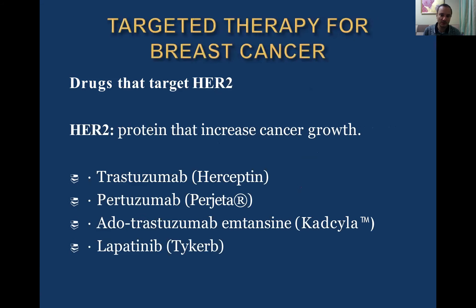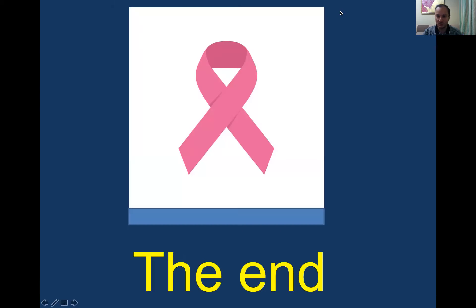Targeted therapy for breast cancer is for HER2/neu positive patients. HER2/neu positive tumors represent a separate group with a very aggressive form of breast cancer, but they are sensitive to targeted therapy. The most famous HER2/neu inhibitors are trastuzumab, pertuzumab (Perjeta), ado-trastuzumab emtansine, and lapatinib (Tykerb). This concludes all the information about breast cancer. Thank you for your attention — the lecture is over.